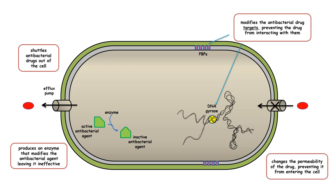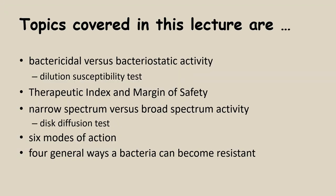The fourth mode of resistance is a change in permeability. Some antibacterial drugs must enter the cell through specific channels. If the bacteria alters the permeability — removing or modifying those channels — the drug cannot enter and therefore cannot reach its target. This concludes the topics covered in this antibacterial drug video.